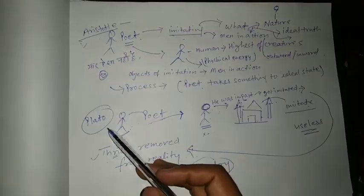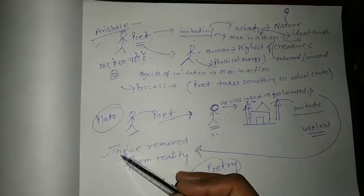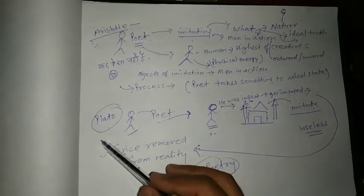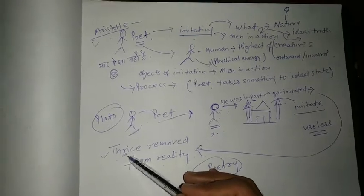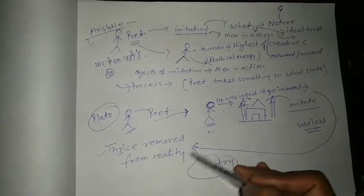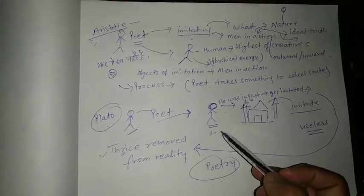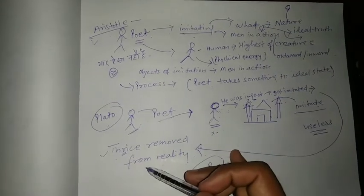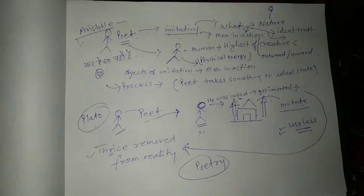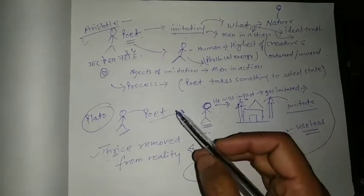So, the argument starts with Plato's statement: thrice, the imitation or poetry is thrice removed from reality. So, what does he mean by thrice removed from reality? That there are poetry in reality three times. And he simply said, poetry is useless for people. And what does he mean by this? Let's make it clear.